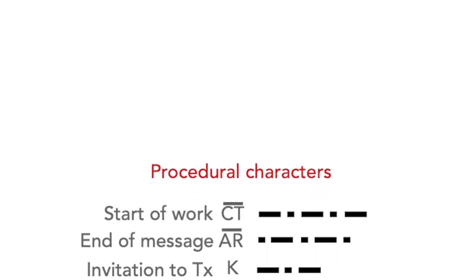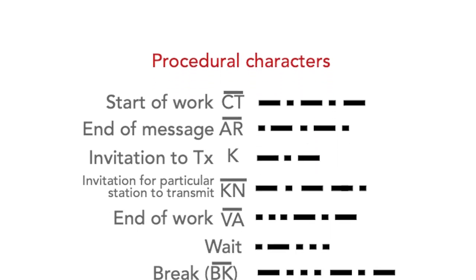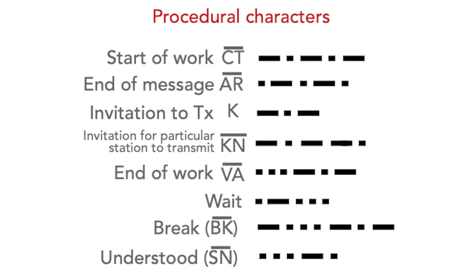When learning to receive and send Morse code, one of the types of characters you'll come across are the procedural characters. These are used to make sure that there's an orderly flow of communications between stations. They include things like the start of the message, end of the message, invitation to transmit, and so on and so forth, and they're really important to make sure that things happen properly.